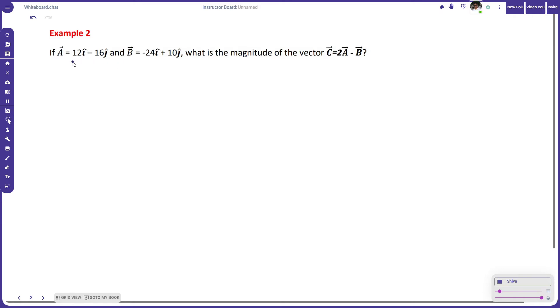The vectors are already given, so I'm not going to write them again. Now we are asked: what is the magnitude of vector c, where c = 2a - b? First we can find what is 2a. Multiplying a scalar with